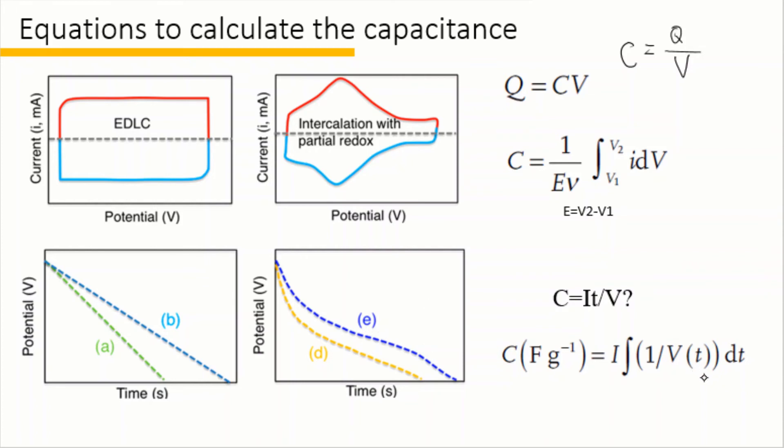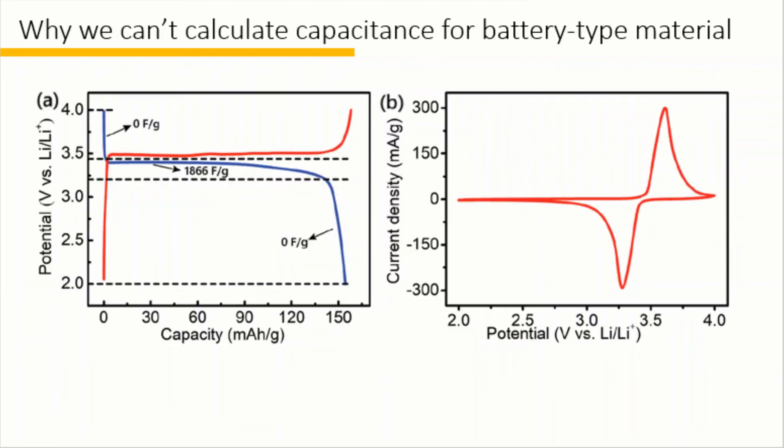We should actually integrate dt over V in order to calculate the capacitance. So no matter for GCD or CV, it is always correct to calculate capacitance from C equal to q over V, and we can further write q equal to integral i dt over V. Some software will offer you the methods to integrate the current change as a function of t, and then you can easily calculate the capacitance from this equation as well.